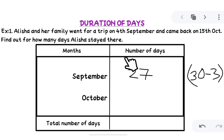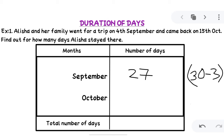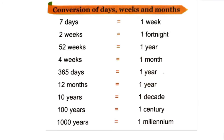In the month of October they returned on 15th October, so we will not count 15th October in their trip days. The number of days counted from October in their trip will be 14 days only. Now we add up: 27 plus 14. 7 plus 4 is 11, carry 1; 2 plus 1 is 3, plus 1 equals 4. So Alicia and her family were on the trip for 41 days.